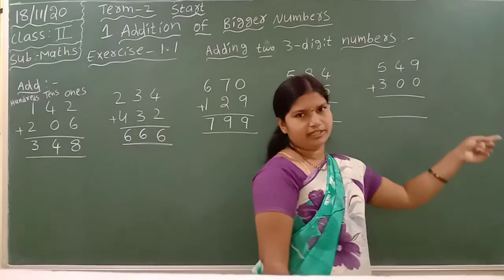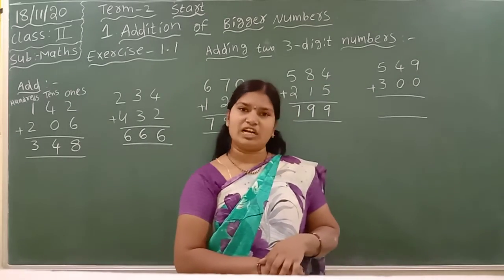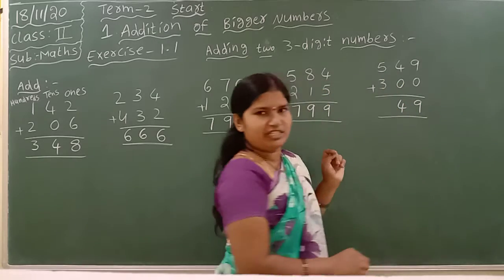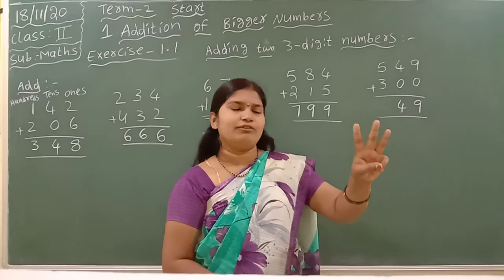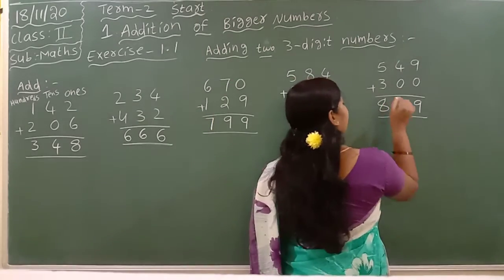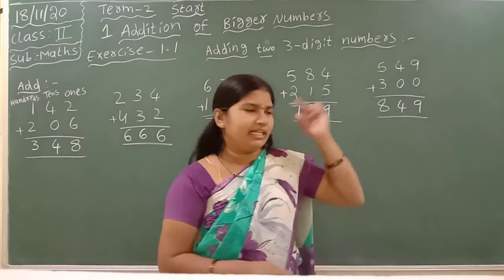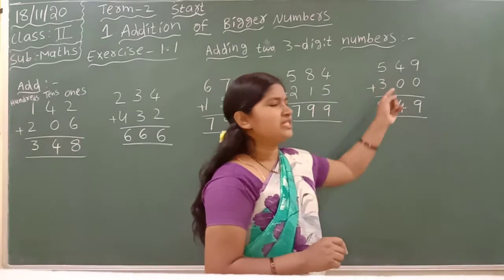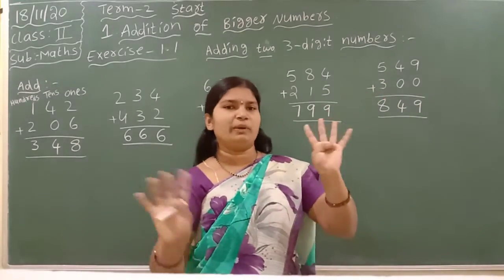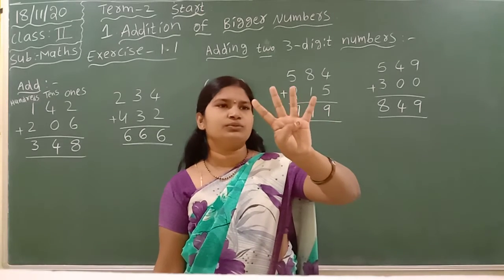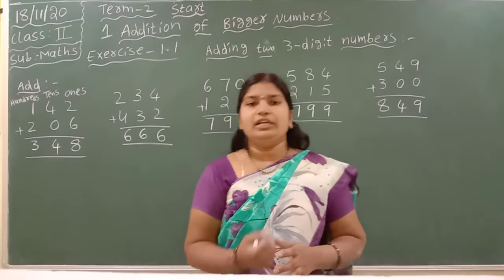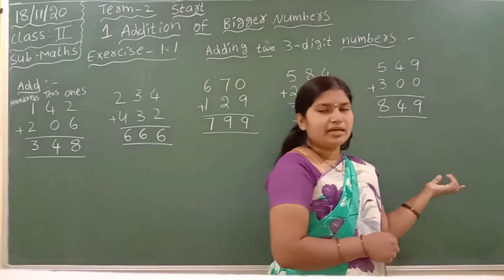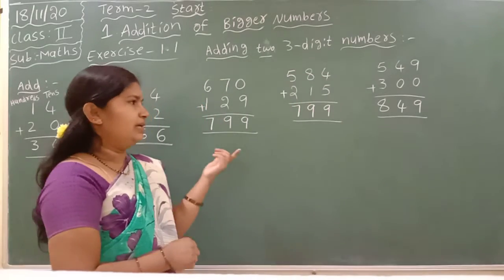Next question: 549 plus 300. First which place do we add, children? We add the 1s place: 9 plus 0 is 9. Next: 4 plus 0 is 4. Next: 5 plus 3 — 5 in the mind, take 3 fingers: 5, then 6, 7, 8. For example, 9 in the mind with 0 means don't open any fingers, so the answer is 9 only. 4 plus 0 also — 0 means don't open any fingers, so 4 remains. If we add 0 to any number, we get the number itself.